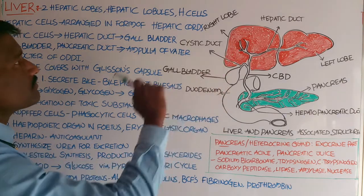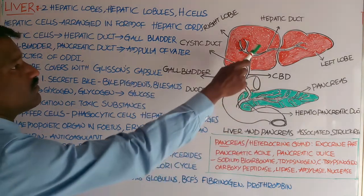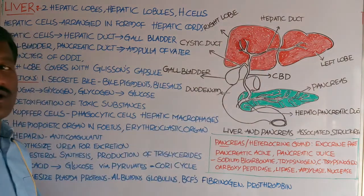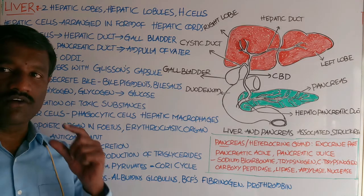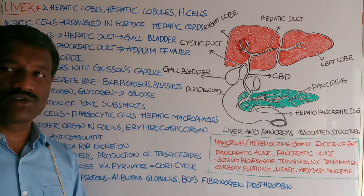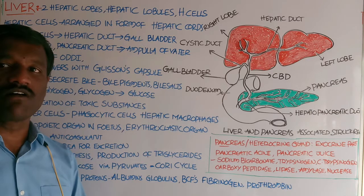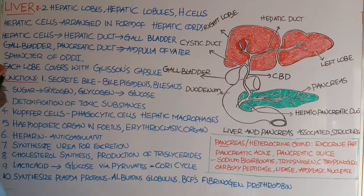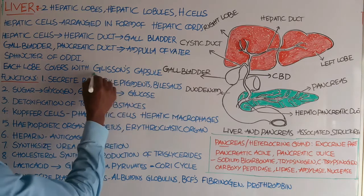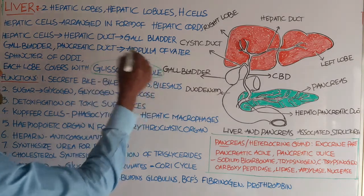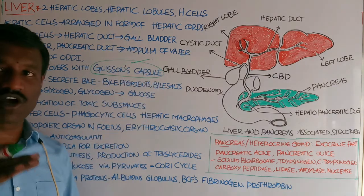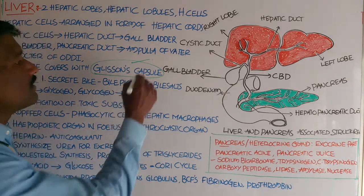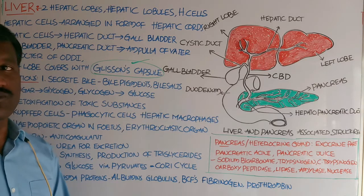Each lobe is covered with a thin connective tissue sheath, which is called Glisson's capsule.